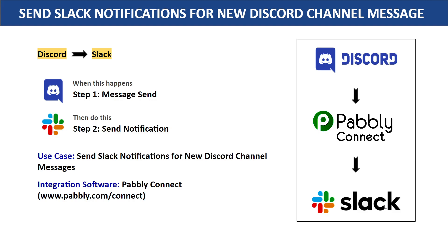You have two choices. The first choice is to copy the message from Discord, sort it out, and manually send it as a notification on Slack. The problem with this approach is it's very repetitive and tiresome. I would suggest bringing in some automation so that whenever a message is sent on Discord, a notification is automatically sent on Slack.